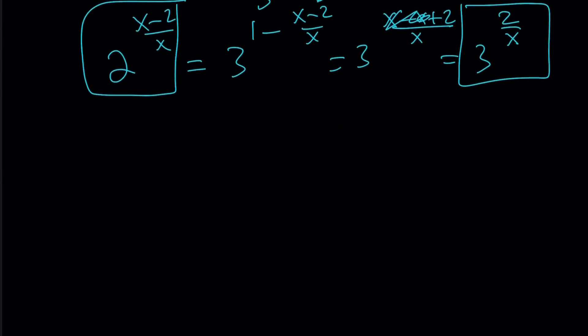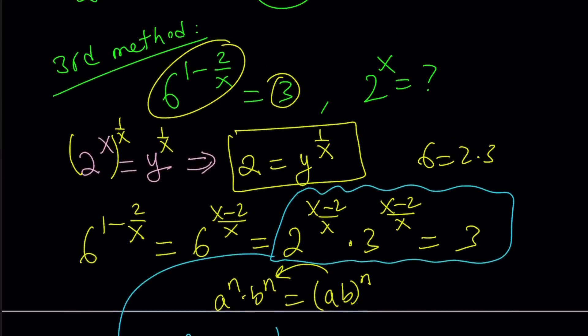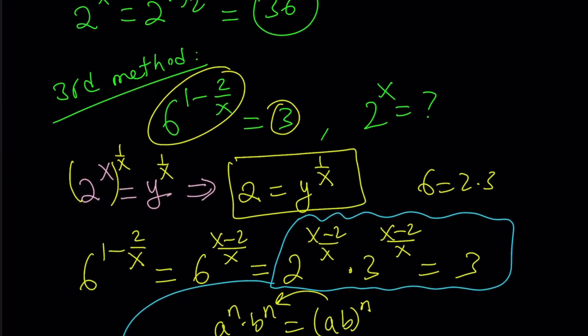Let's go ahead and rewrite it. 2 to the power x minus 2 over x equals 3 to the power 2 over x. It kind of looks confusing, but the idea is pretty simple. What we do here is isolate 2 and write it in terms of x and y, and then break down the 6 into 2 times 3, and then just go from there.